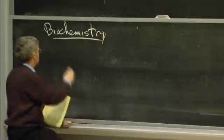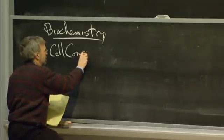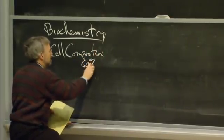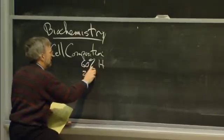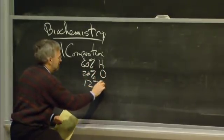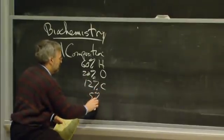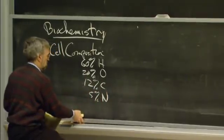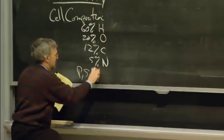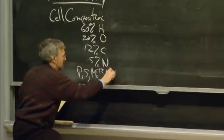Let's begin by thinking about the composition of a cell, so that's the basic unit of life. It's about 60% hydrogen, 20% oxygen, 12% carbon, 5% nitrogen, and then there's a bunch of other stuff: phosphate, sulfur, magnesium, manganese, etc.